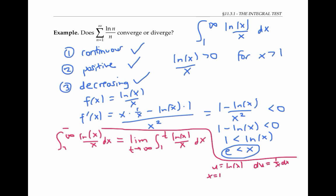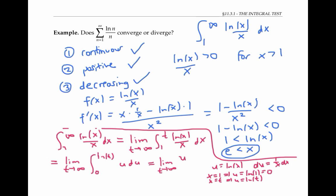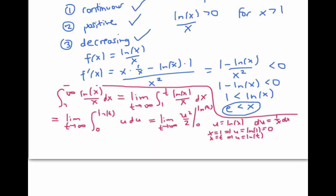When x equals one, u equals ln of one, which is zero. When x equals t, u equals ln of t. Substituting in, we get the limit as t goes to infinity of ln of t squared over two minus zero.